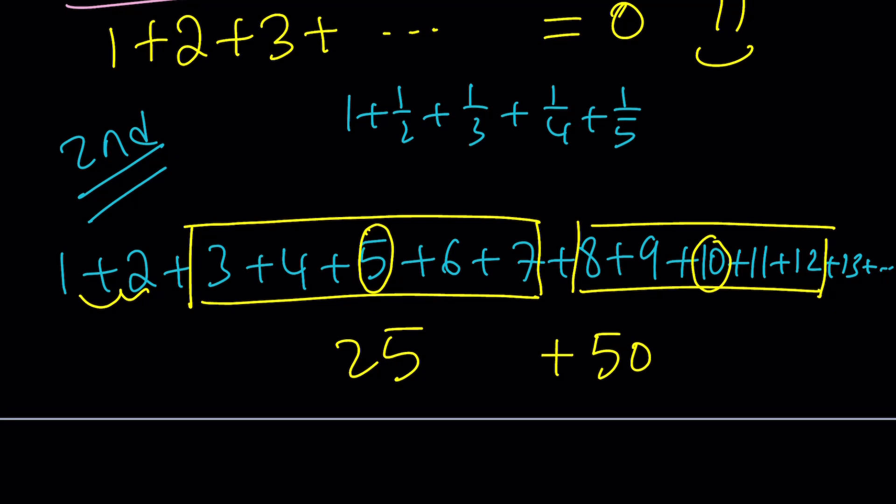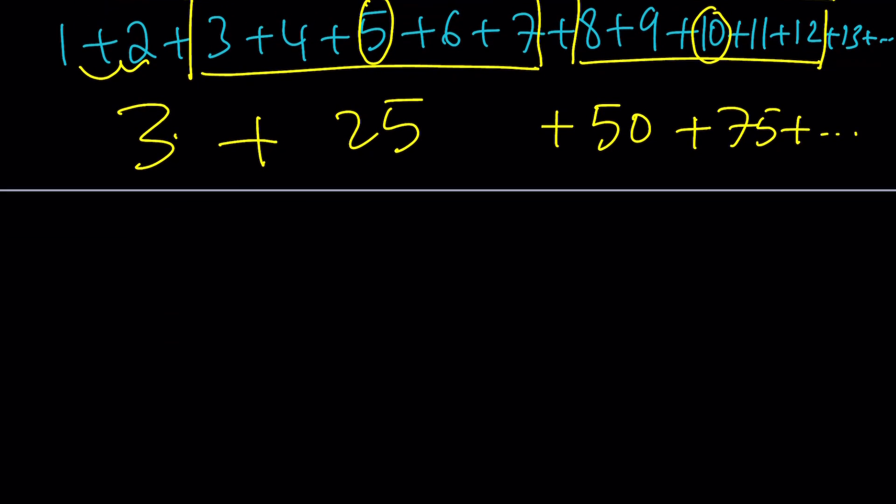And then, of course, 1 plus 2 is a 3. And let's put a plus sign here and a plus sign here. And, of course, the next one is going to be 75. Following the pattern, you're going to realize, if you write 13, 14, 15, 16, 15, 16, and 17, you're going to realize it adds up to 75.